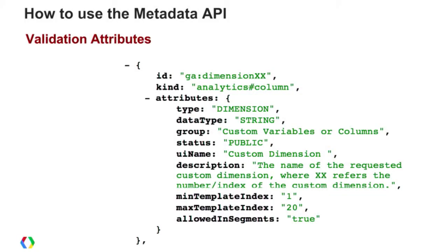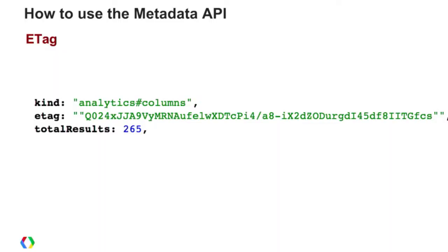Finally, we have some attributes that help with validation. We have an 'allowed in segments' attribute, which helps you identify whether a particular dimension or metric can be used in a reporting query as a segment. If it is allowed, this attribute will exist; if not, it will not exist. This is helpful for validation and making sure you're building queries that will work properly.